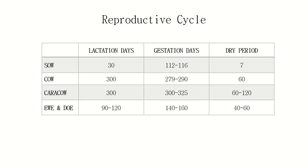Let's discuss the reproductive cycle of the different farm animals. We have lactation days, gestation days, and dry period. Lactation days are the days where the animal produces milk for the nourishment of their young. Gestation days are the days when the animal is pregnant, while dry period is the period where the animal is neither pregnant nor lactating — also known as the rest days. As you can observe, the larger the animal, the longer its lactation, gestation, and dry period. The longest gestation days, lactation days, and dry period are for the cow and the caracow.